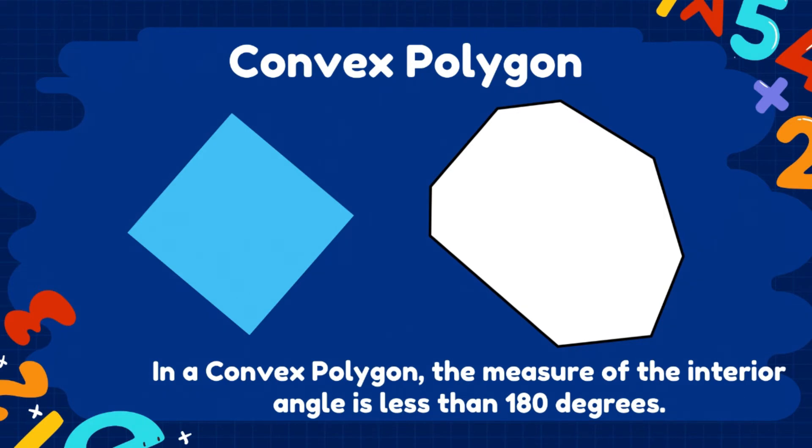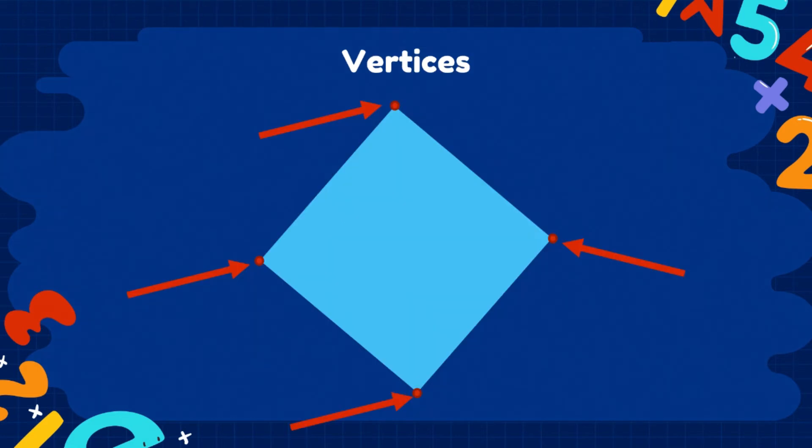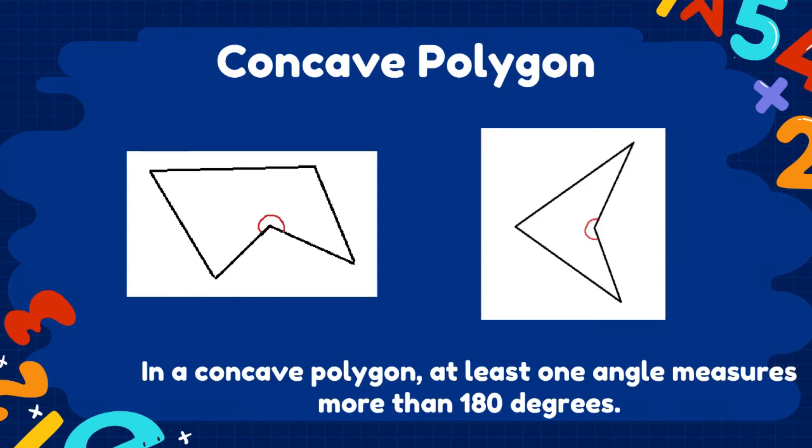Now let us proceed. The next type of polygon is called as convex polygon. It is called convex since the measurement of the interior angle is less than 180 degrees. Also, the vertices are always pointing outside. But sir, what is a vertex? The vertex or the vertices are the point where lines meet.